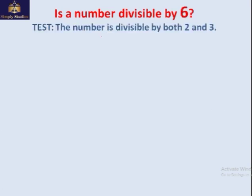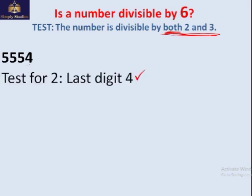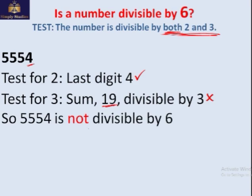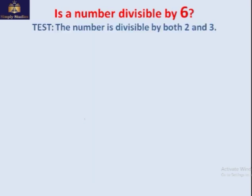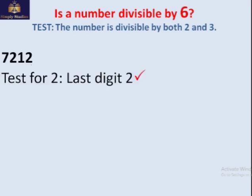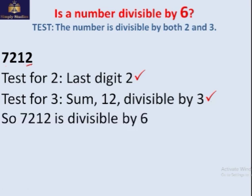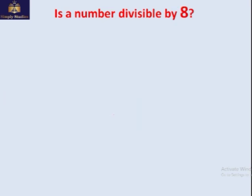Is the number divisible by 6? A number is divisible by 6 only if it is divisible by both 2 and 3. For 5554: the last digit is 4, which is even — divisible by 2. Sum of digits: 5+5+5+4 = 19, not divisible by 3, so 5554 is not divisible by 6. Another number: 72122 — last digit 2 is even, and 7+2+1+2+2 = 14... wait, sum is 12, which is divisible by 3. So it's divisible by both 2 and 3, meaning it's divisible by 6.